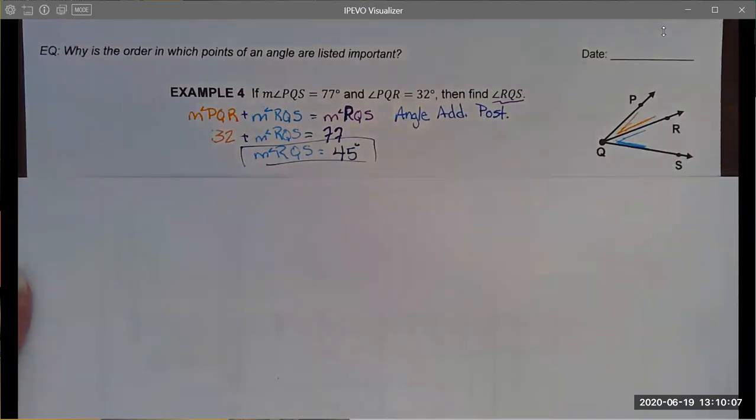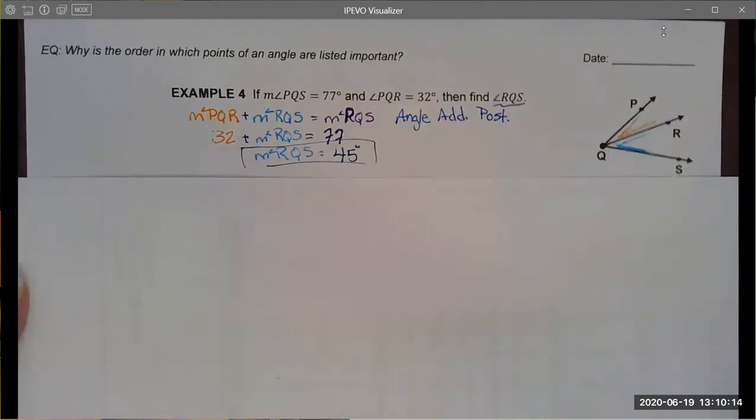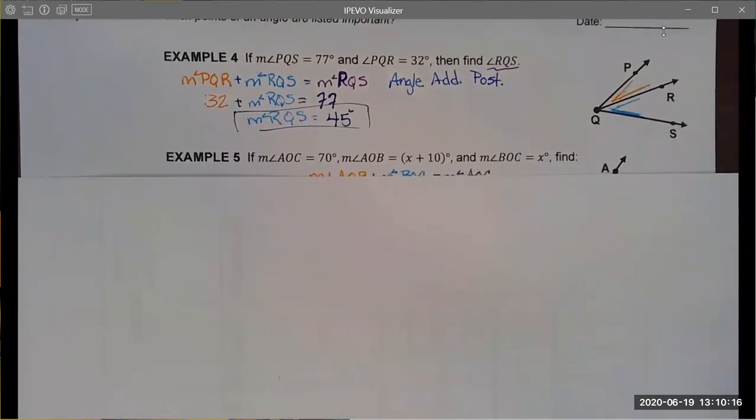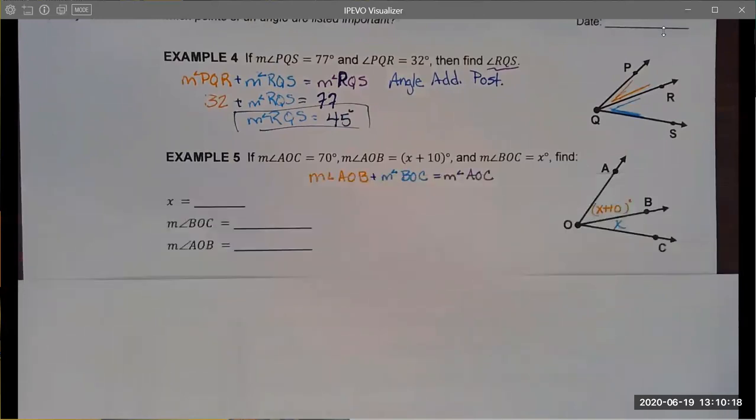It's pretty straightforward. This is an easy example because it was just numeric. There were no variables involved other than our unknown measure of RQS. There are more interesting examples.